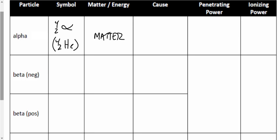Beta-negative decay works differently. You're not breaking a chunk off, but you are releasing something from the nucleus to make it more stable. That thing is a beta particle, symbolized as 0, -1 beta, or 0, -1 E. A beta particle is an electron, so it is matter.